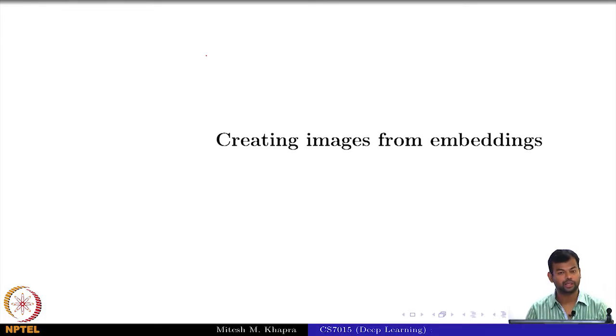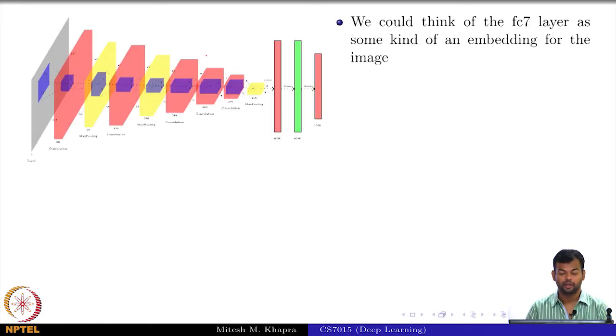The next thing that we will see is how do you create images from embedding. Let me see what that means. Remember that each of these things can be thought of as an embedding of the image, because you had this original image which was 227 cross 227 dimensional and now you have a 4096 representation for that or a 256 cross 7 cross 7 representation for that. You could just flatten it as a vector and you could treat that as an embedding for the original image.